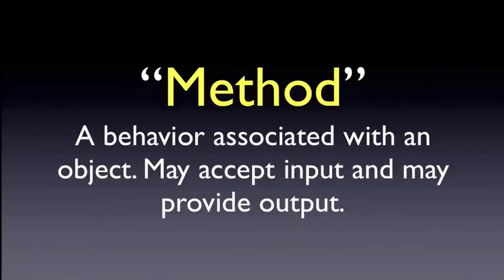The way that we interact with objects — the behaviors we interact with on an object — are technically called methods. A method is a behavior that's associated with an object. These need to be predefined, and the object will then execute those behaviors. Some methods accept input, and other methods may provide output. So the behaviors that our objects can perform are technically called methods, and we can modify those behaviors by providing input and reap the benefit by getting some output.